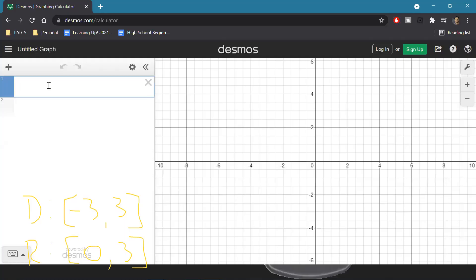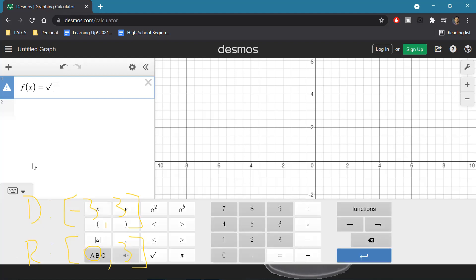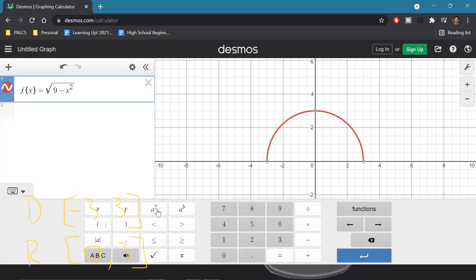just f of x, if you type in SQRT, it'll bring up the square root symbol, or you could just go down here in the keyboard and get it there. So nine minus x squared. I'm using shift six on the keyboard to get it as an exponent. And again,